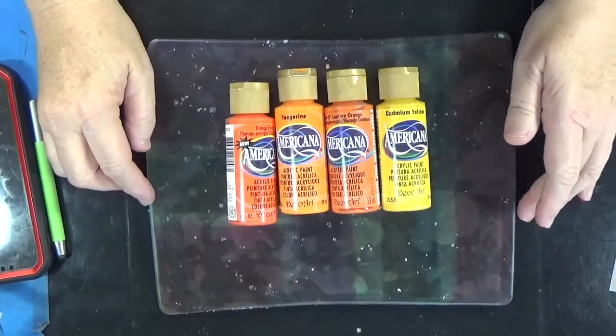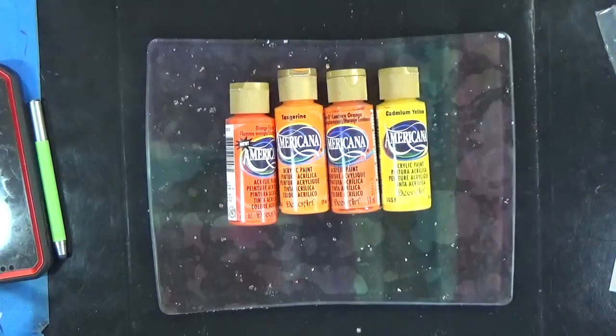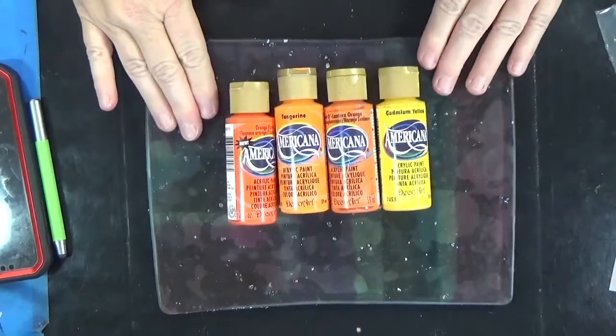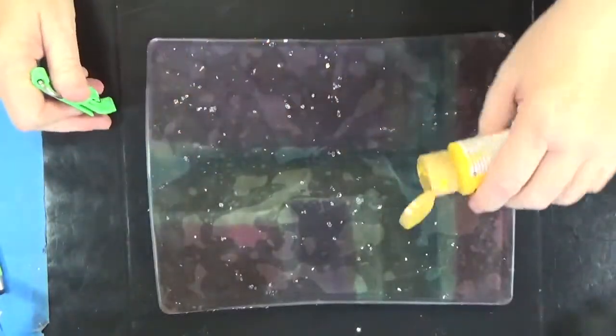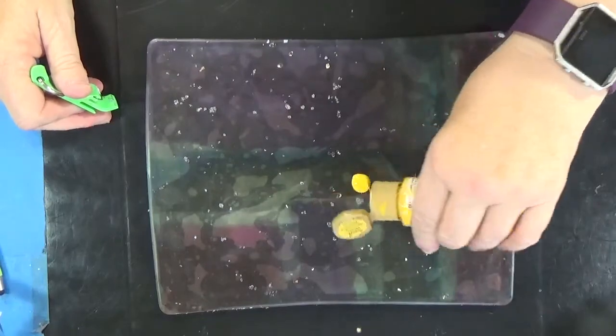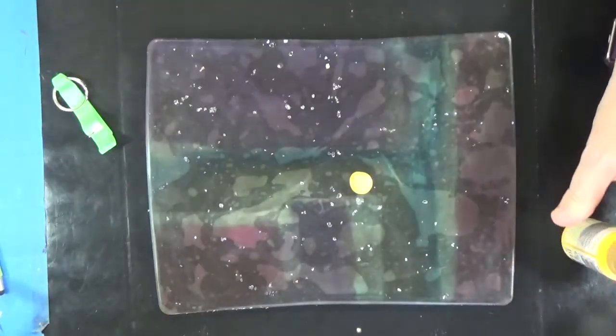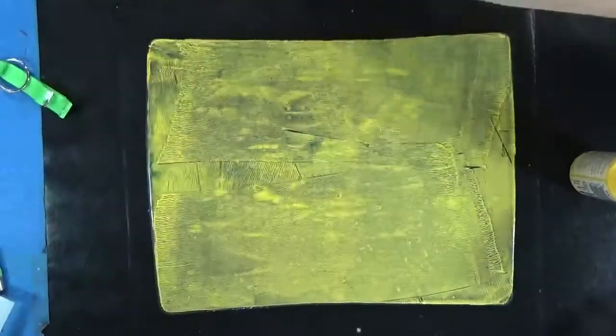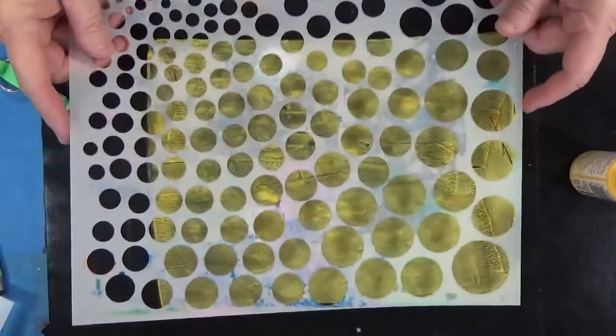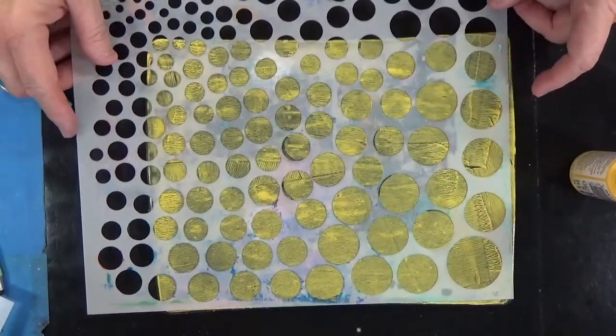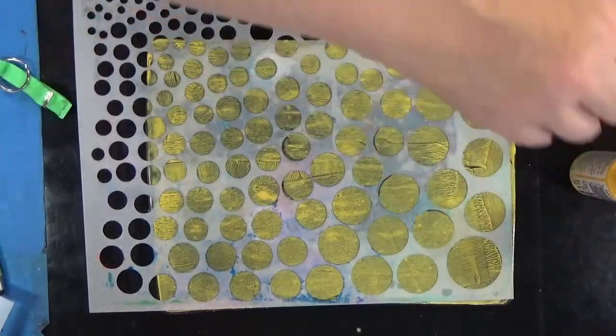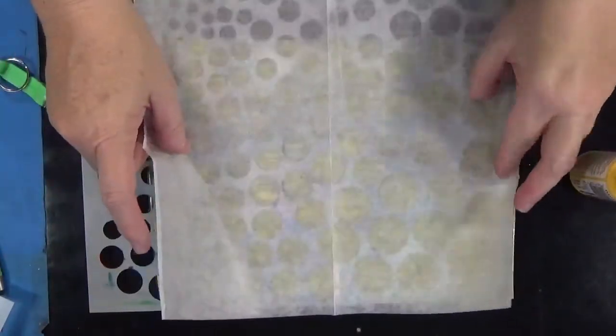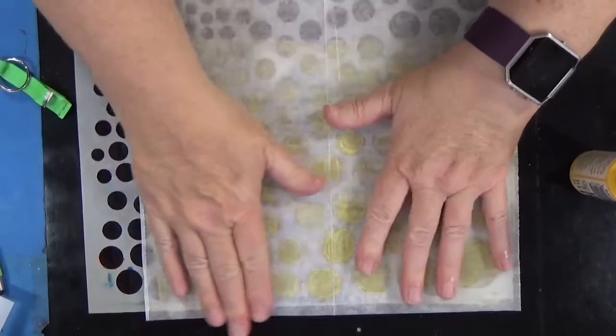We're going to use shades of yellow and oranges, still using the 8 by 10 inch jelly plate. Notice how clean my plate is now. I did clean it in between printing sessions this time. We're starting with cad yellow. This is that Circle Explosion stencil again, another stencil that I use frequently. I'm just using my deli paper and picking up that yellow.